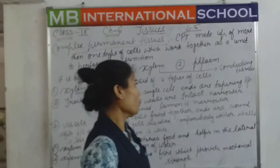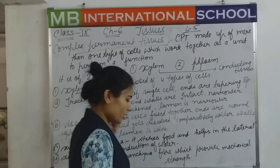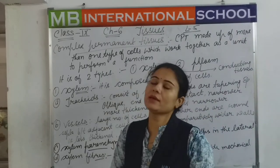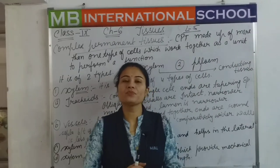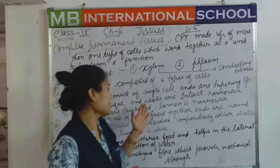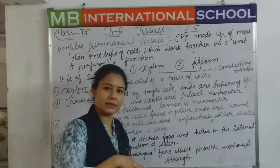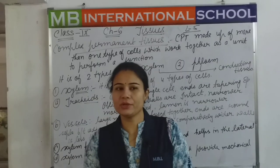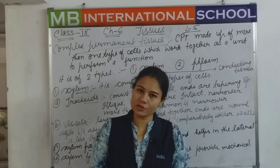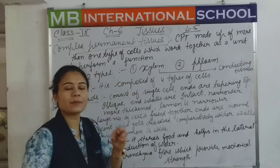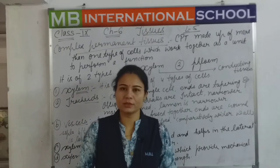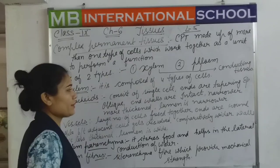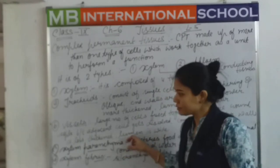Now we are starting the very important topic — xylem. Xylem is important for the conduction of water as well as minerals. It is composed of four types of cells: first is tracheids, second is vessels, third is xylem parenchyma, and fourth is xylem fibers.